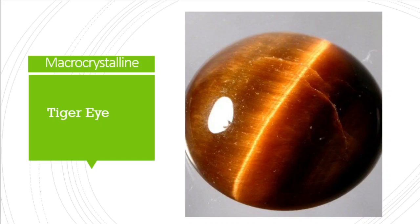Then blue quartz, which has a blue color as its name indicates. Next is tiger's eye, a brown color opaque stone which displays a single ray of light when you provide a light source from above. Crocidolite asbestos fibers are the main reason for this appearance; these fibers replaced by quartz produce this effect in the gemstone.